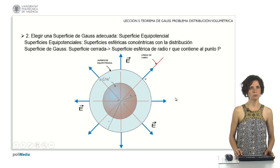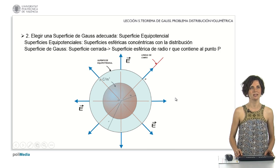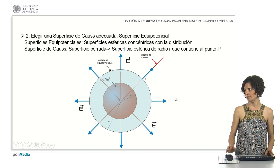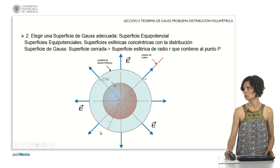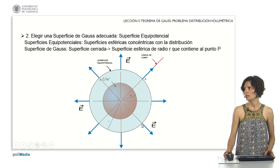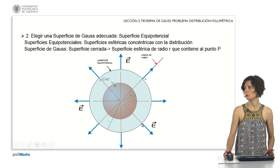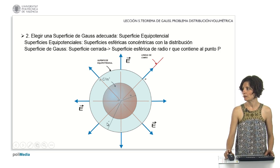Then we must choose the Gaussian surface — it must be an equipotential surface. Recall that equipotential surfaces are those to which the electric field is perpendicular at all points. In this case, as the electric field is radial, the equipotential surfaces are spherical surfaces concentric with the distribution. The Gaussian surface has to be a closed surface, so it is going to be a spherical surface of radius r (lowercase), passing through the point P where we want to calculate the electric field.